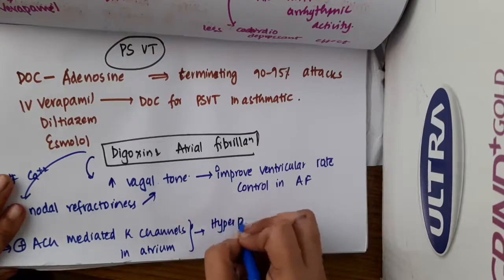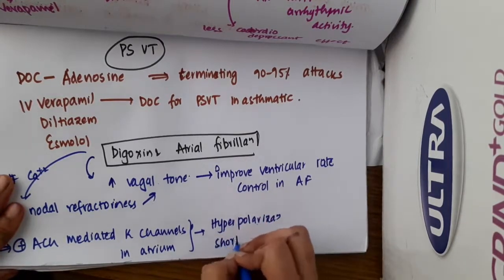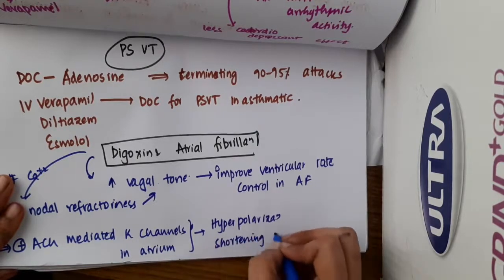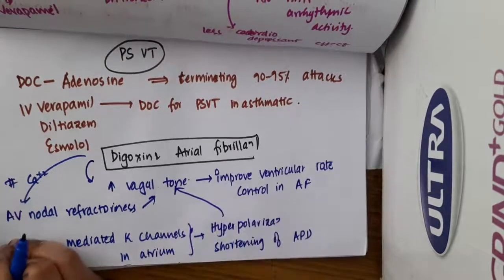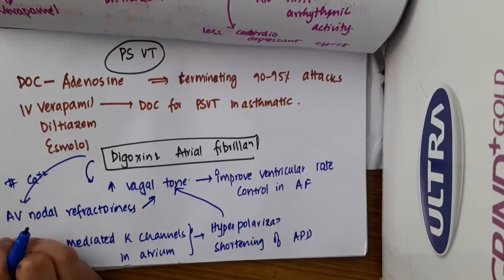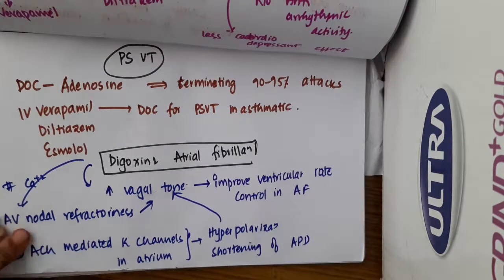On activating acetylcholine-mediated potassium channels in atrium, it causes hyperpolarization and shortening of action potential duration, thus increasing the vagal tone. So these are two ways of increasing the vagal tone. Thank you for watching.